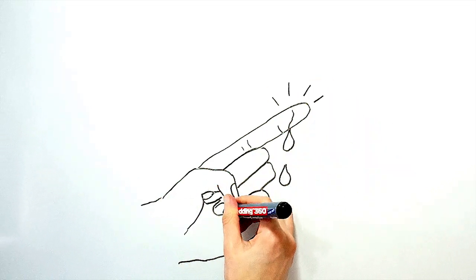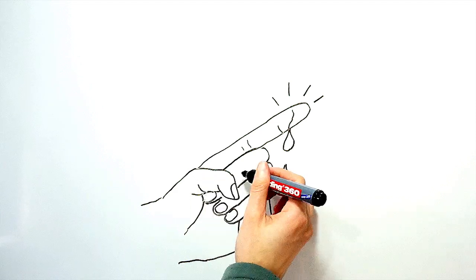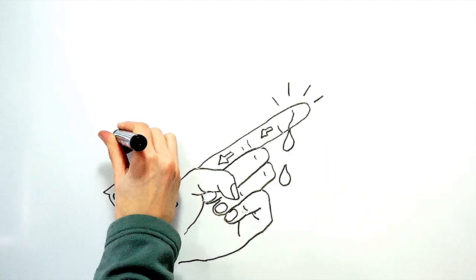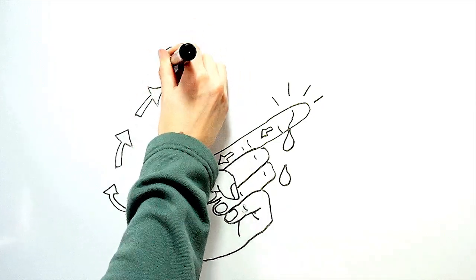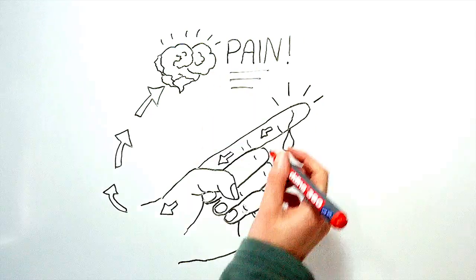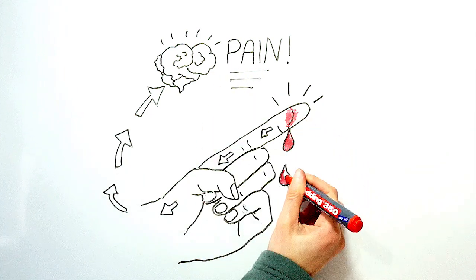Now pain by definition is a combination of emotional and physical distress, and so requires a nervous system like our own. Now the biology of plants is complex, and there are still many mysteries about them, but we can be pretty sure they don't have anything that resembles a brain or a nervous system.